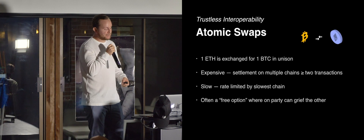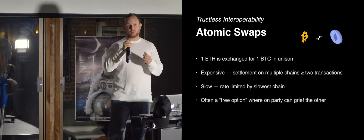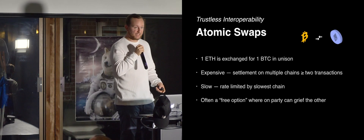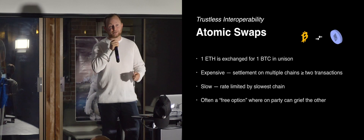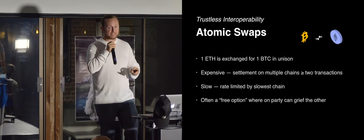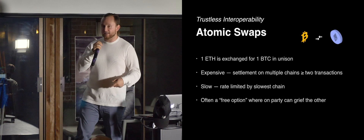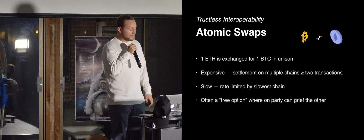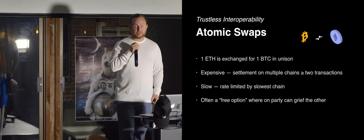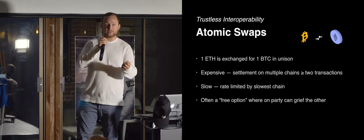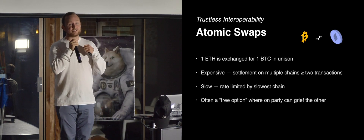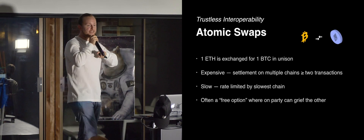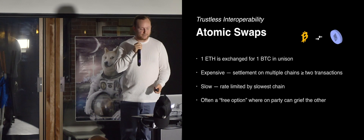Another approach is atomic swaps — an Ether and a Bitcoin swapped in unison during the trade. The problem is that it's expensive because you have settlement on multiple chains, and it tends to be rate-limited by the slowest chain. With probabilistic finality, if you have to wait 30–40 minutes for this to go through, it's not a good user experience on a DEX. You also often end up with the free option problem, where the last trader to sign off can wait until the last minute and, if the exchange rate doesn't move in their favor, just cancel it — so it's not very fair.